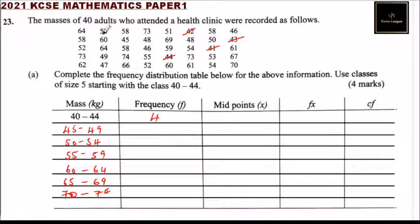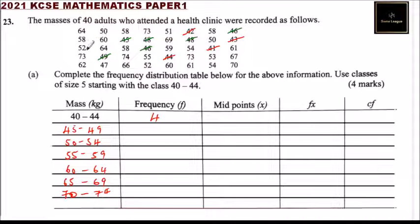For the class 45 to 49, counting through the data we get 7. For the class 50 to 54, we count and get 8.